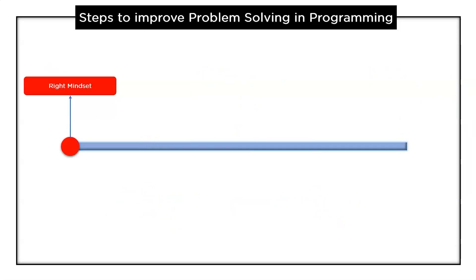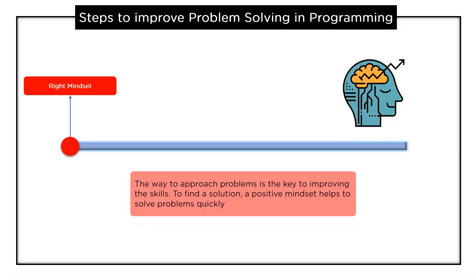The first one is right mindset. The way to approach problems is the key to improving skills. To find a solution the positive mindset helps to solve problems quickly. If you think something is impossible then it is very hard to achieve.